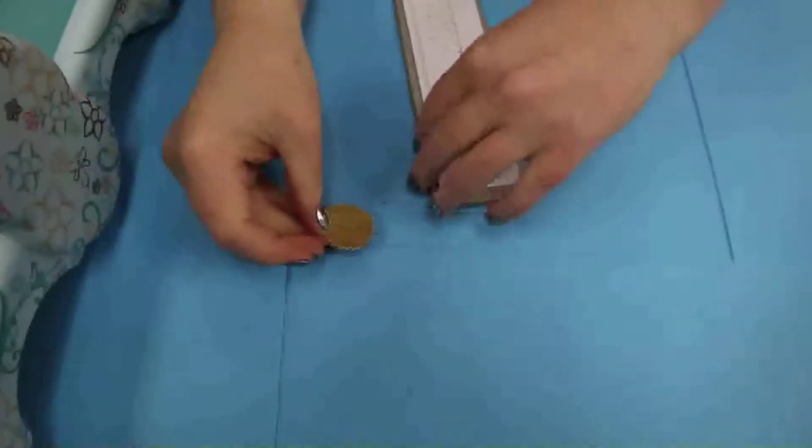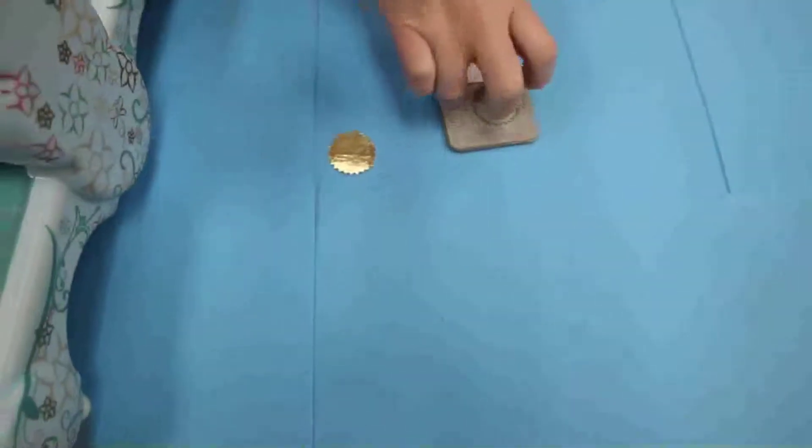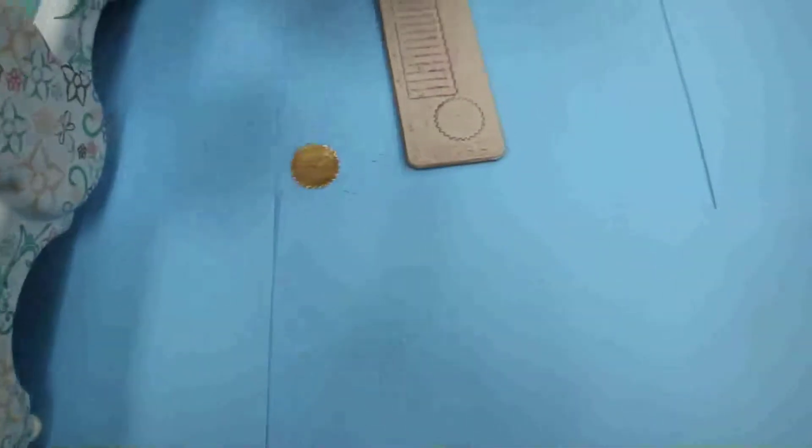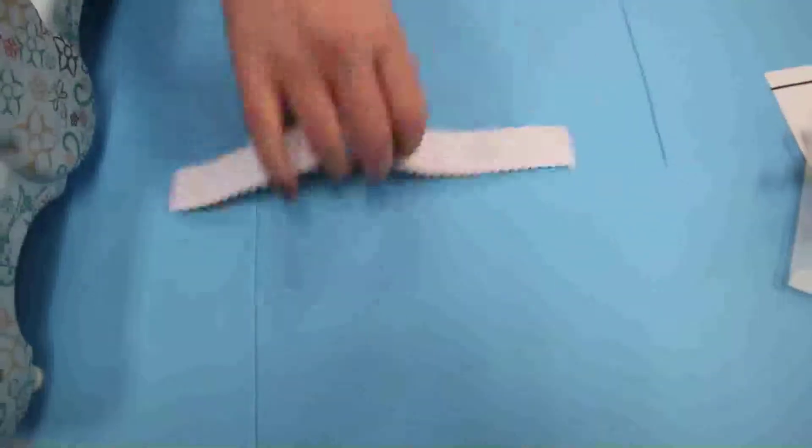So when you cut this, this is actually going to cut out one medallion and it's going to cut this guy out, which is what's going to do the rosette.